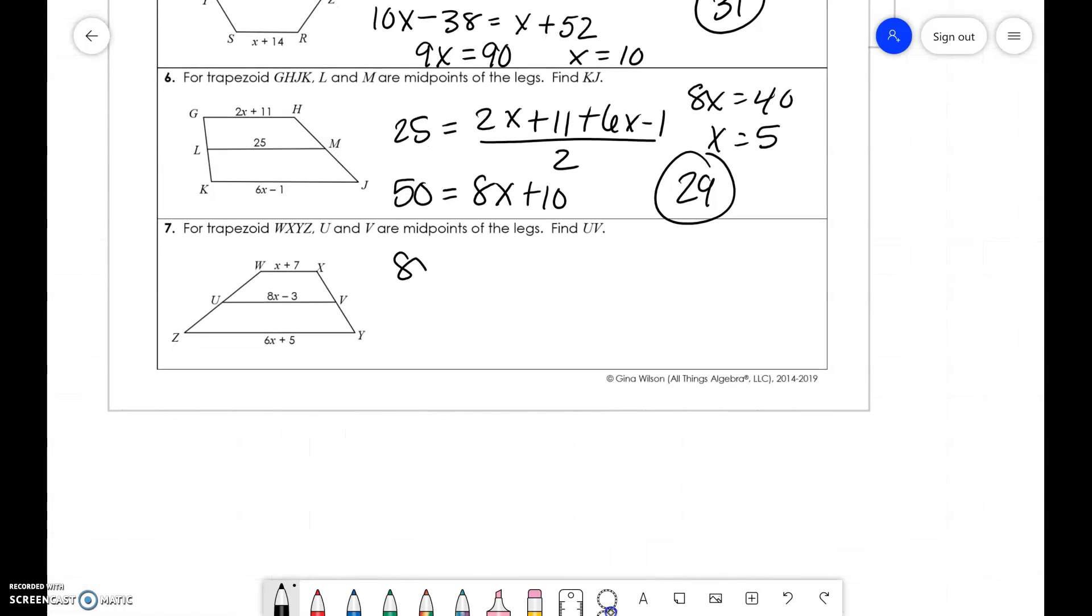And the last one. 8X minus 3 equals X plus 7 plus 6X plus 5 over 2. We get 9X equals 18, X equals 2. Plug it in for UV. So, 8 times 2 minus 3 is 13. And we're done.